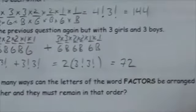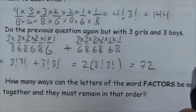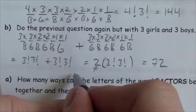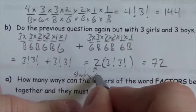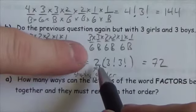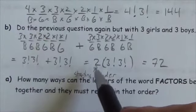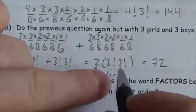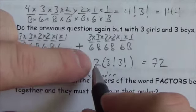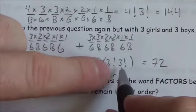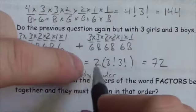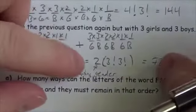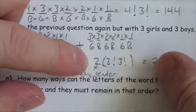Another way to think about this: the factor of 2 represents the choice of starting gender, while the factorials represent the choice of individual persons. There are two different levels of thinking occurring — choosing which gender group starts, then organizing the actual people.